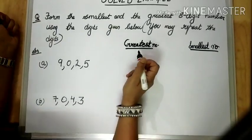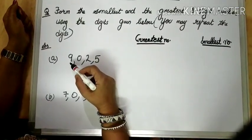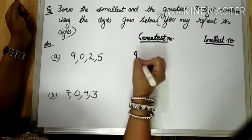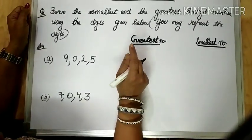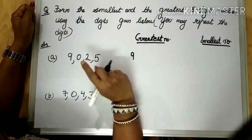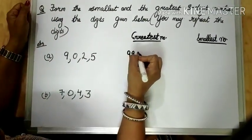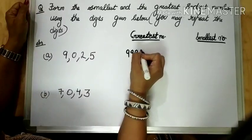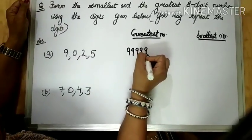In order to form the greatest number, which is the greatest digit here? The greatest digit is 9. So, in order to form the greatest number, we will repeat the highest digit — that means 9. How many times are we going to repeat it? Since we have to form an 8-digit number, we will repeat it 5 times.